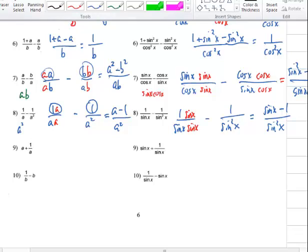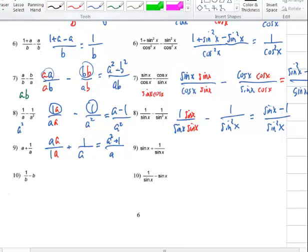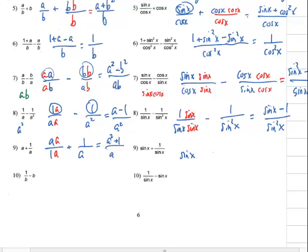For the next one, I have a plus 1 over a. The common denominator is a. The first term was plain a over 1, so I put an a in top and bottom. Now that I can add them with the same denominator, I've got a in the bottom and a squared — not 2a — plus 1 in the numerator. The same thing happens on the right: I put sine of x in the bottom of the left term, and that turns the expression into sine squared of x plus 1 all over sine of x.